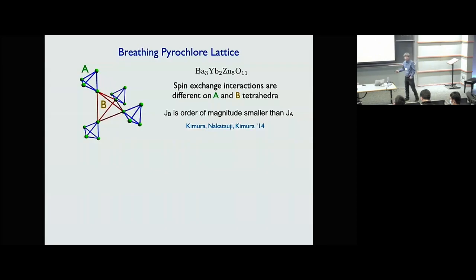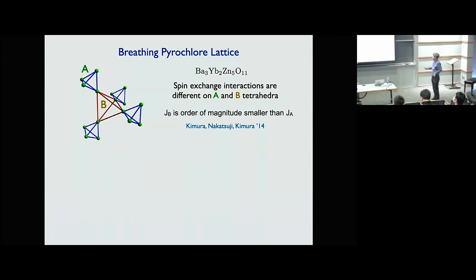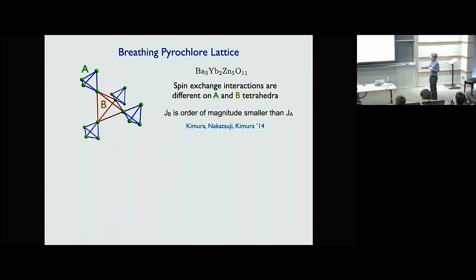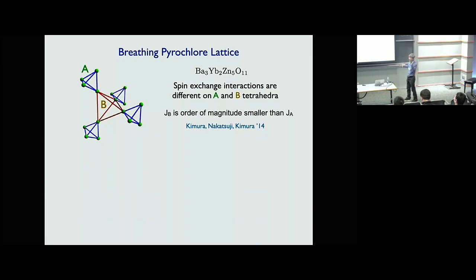The breathing pyrochlore is the usual corner-sharing tetrahedron lattice, but here the size of the A-tetrahedron and the B-tetrahedron is different. This means the spin exchange interactions on different tetrahedra are different. I'll assume the interaction on the B-tetrahedron is antiferromagnetic but smaller than the interaction on the A-tetrahedron. A material example is ytterbium, which carries a spin-1/2 moment — materials like this actually exist.